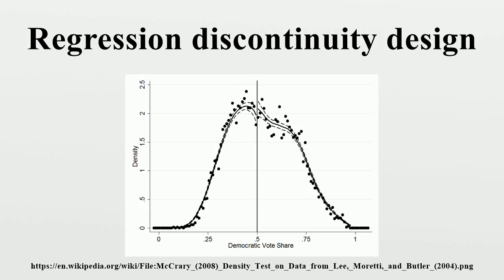Despite the absence of an experimental design, an RDD can exploit exogenous characteristics of the intervention to elicit causal effects. If all students above a given grade — for example 80% — are given the scholarship, it is possible to elicit the local treatment effect by comparing students around the 80% cut-off. A student scoring 79% is likely to be very similar to a student scoring 81%, given the predefined threshold of 80%. However, one student will receive the scholarship while the other will not. Comparing the outcome of the awardee to the counterfactual outcome of the non-recipient will hence deliver the local treatment effect.